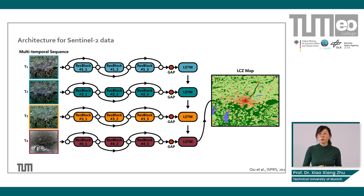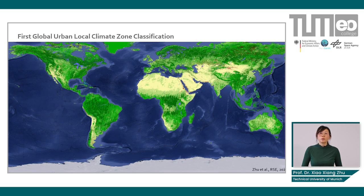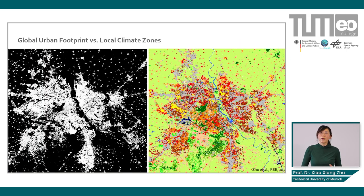For multi-seasonal Sentinel-2 data, a common approach is to stack convolutional modules with LSTMs — on one hand extracting high-level features from multi-seasonal data, and on the other hand leveraging sequential temporal change. This allows us to benefit from phenological patterns for better classification of Local Climate Zones. What you see on screen is the first global urban Local Climate Zones map, with the reddish built-up areas being the most interesting. Zooming in, on the left is the well-known global urban footprint — a binary urban/non-urban classification — while on the right the Local Climate Zones provide much richer climate and morphology-related semantics.